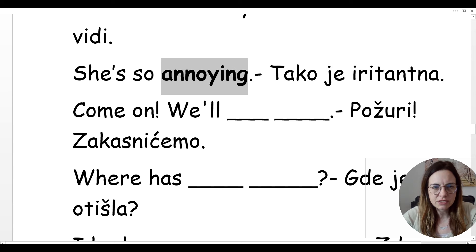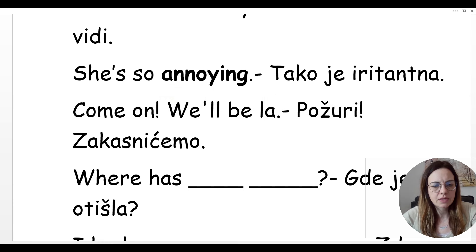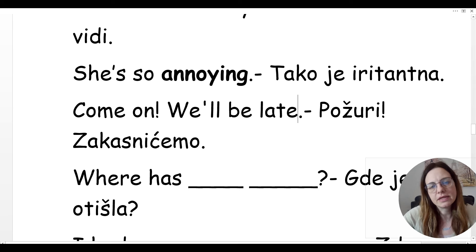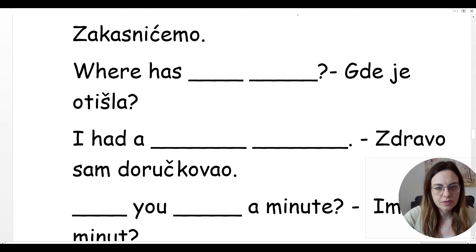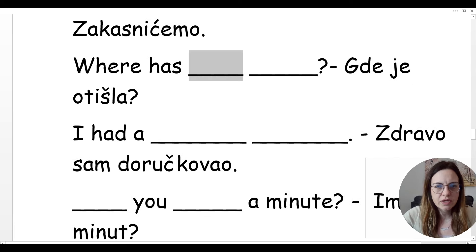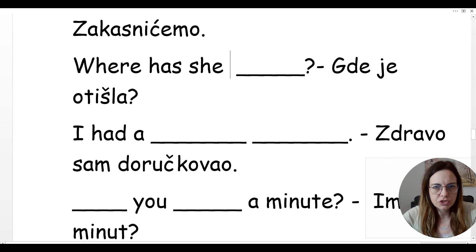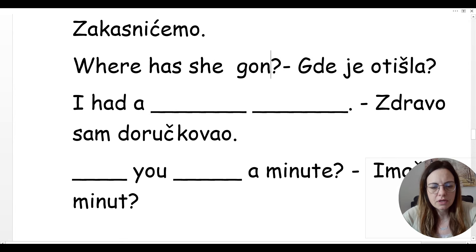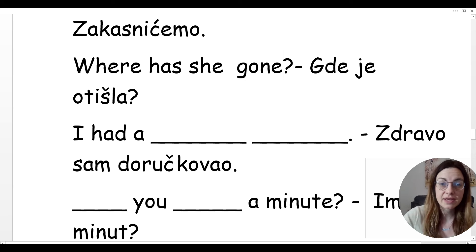Požuri, zakasniće mo — come on, hurry up, we'll be late. Hajde, zakasniće mo — come on, we'll be late. Požuri — hurry up. Gde je otišla? Dakle, perfect tense — gde je? Where has she gone?